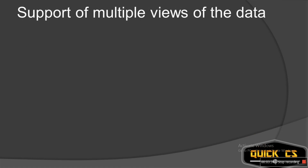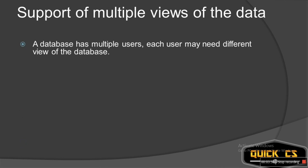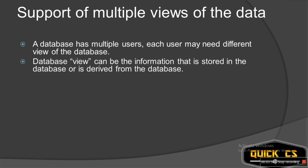Now let's look at the third characteristic: support of multiple views of the data. A database has multiple users, and each user may need a different view of the database. Suppose there is a database of student information. A student can access the database and might get his attendance percentage or the scores he has scored in a subject. Whereas a teacher also has access to the same database and wants to get the contact details of parents. But a student cannot get the same information as the teacher — a student does not have those privileges. So there is a different view for a student and a different view for the teacher.